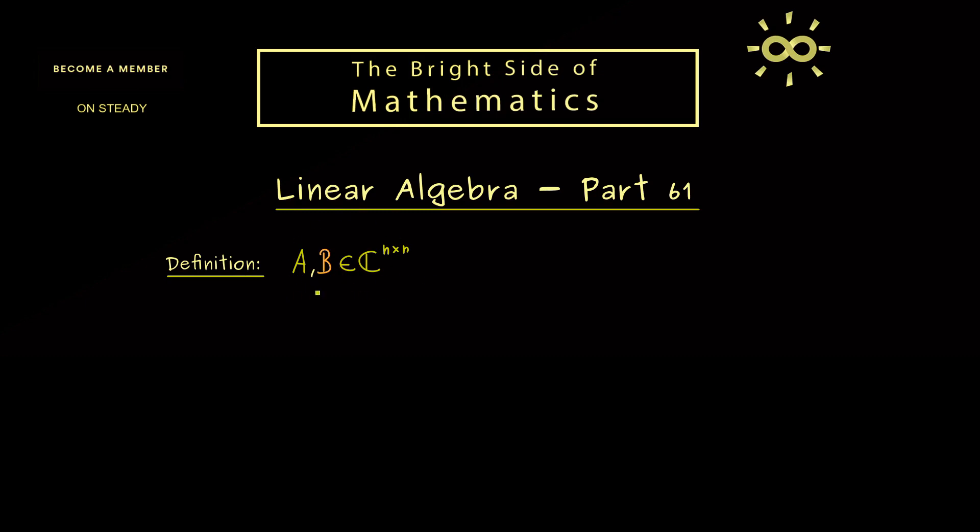So in particular, this includes our real case. And now, A and B are called similar to each other if we can transform the one into the other one. More precisely, this is the case if we find an invertible matrix S, such that S inverse B S is equal to A.